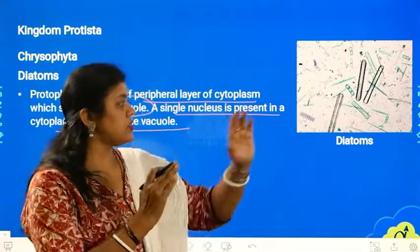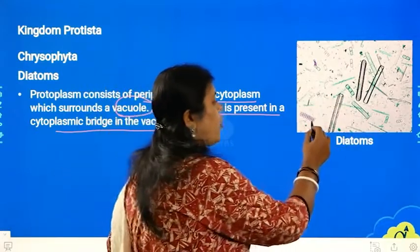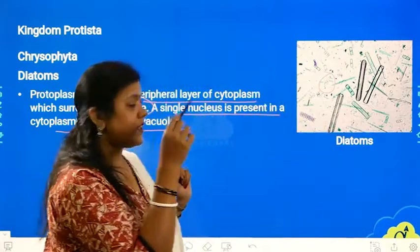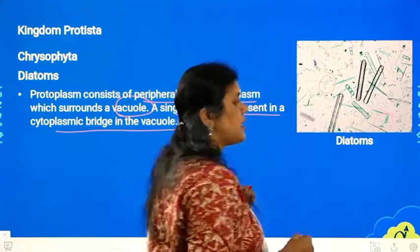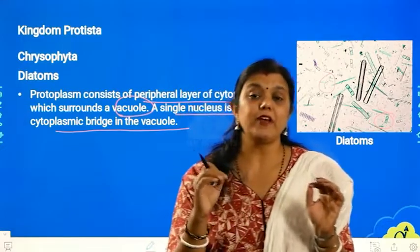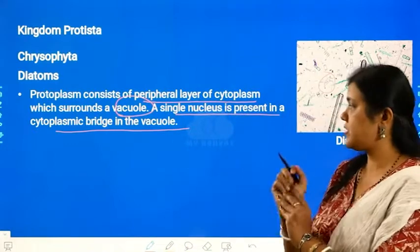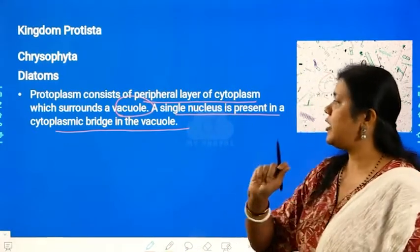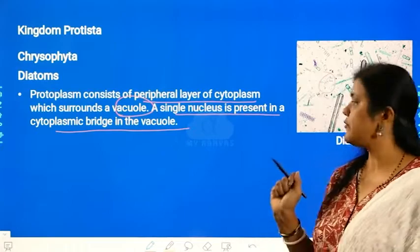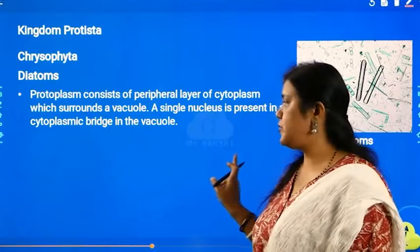Diatoms have a typical geometric pattern type of structure — they are not irregular in shape. If you observe the diagrams, they all have some typical shape like a rod shape or a slender type or a box type of appearance. Diatoms are very good at maintaining these shapes because of the presence of the two valves closing with each other properly. They have a peripheral layer of cytoplasm surrounded by a vacuole, with a single nucleus maintaining a cytoplasmic bridge in the vacuole.